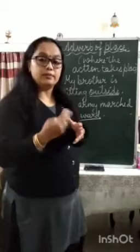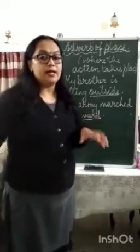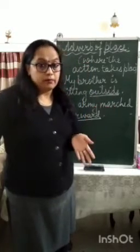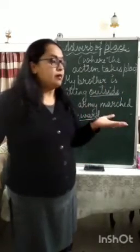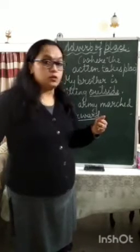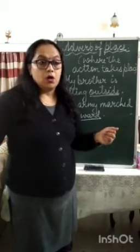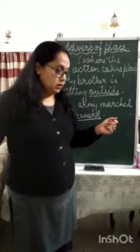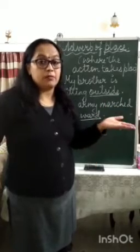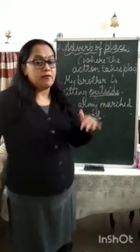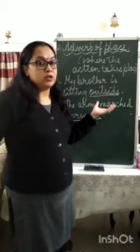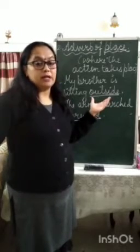More adverbs of place include: here, there, everywhere, nowhere — for example, 'I can't find my papers anywhere', or 'the sheets were scattered everywhere', or 'I asked my friend to come here'. So words like here, there, everywhere, nowhere, ahead, forward, behind — these tell you where an action takes place and come under adverb of place.